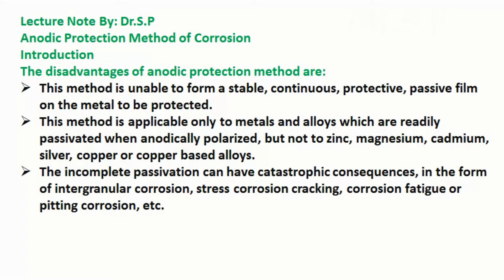The disadvantages of anodic protection method are: this method is unable to form a stable, continuous, protective passive film on the metal to be protected. This method is applicable only to metals and alloys which are readily passivated when anodically polarized, but not to zinc, magnesium, cadmium, silver, copper, or copper-based alloys. The incomplete passivation can have catastrophic consequences in the form of intergranular corrosion, stress corrosion cracking, corrosion fatigue, or pitting corrosion.